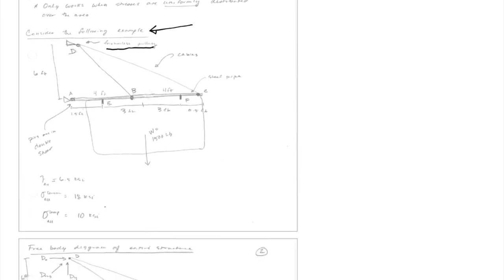A couple of allowable stresses are given — these are values you would look up for the particular material being used. The allowable shear in the pins is 6.5 kips per square inch. The pins are located here, and we're going to assume those pins are in double shear. For the steel member loaded axially, we have allowable stresses in tension and compression, and they're going to be different.